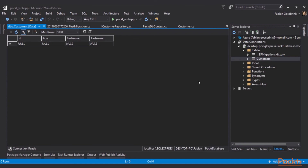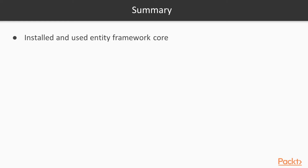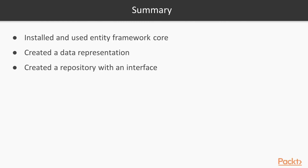In this video we saw how to install and use Entity Framework Core — we used NuGet to install it and accessed it via the DbContext from the Entity Framework Core namespace. We created a data representation for our objects, which are customers in this case, and added them to the DbContext. We built a repository to work with customers on the DbContext, added the repository to ASP.NET Core's dependency injection system, and saw how to create the database with Visual Studio and view the data stored in the customers table.